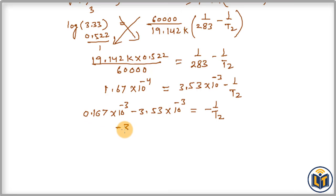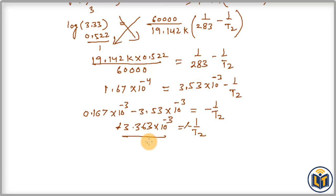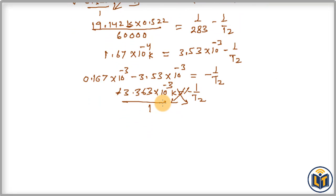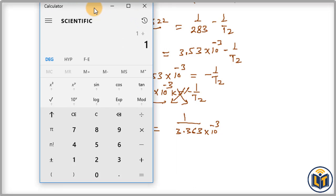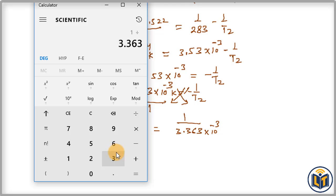The negatives cancel, so 1/T2 = 3.363 × 10⁻³. By cross multiplication, T2 = 1 / (3.363 × 10⁻³). Note that the unit of this value is Kelvin, so T2 will also be in Kelvin. Dividing 1 by 3.363 × 10⁻³ gives T2 = 297 K.